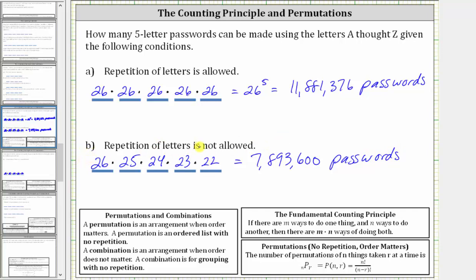Let's look at part B again using what's called a permutation. A permutation is an arrangement when order matters — an ordered list with no repetition. In contrast, a combination is an arrangement when order does not matter; a combination is for grouping with no repetition. Because we can think of the five-letter passwords as an ordered list with no repetition using the 26 letters from the alphabet, we can solve part B using a permutation. The number of permutations of n things taken r at a time is equal to n permute r, which equals n factorial divided by the quantity (n minus r) factorial.